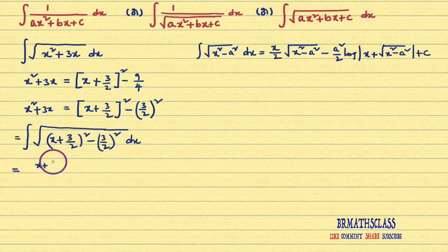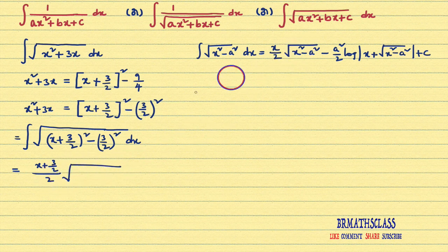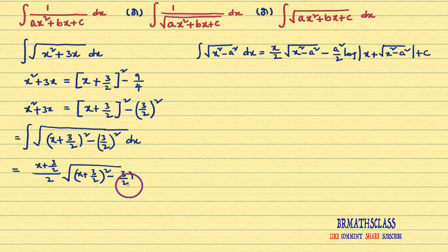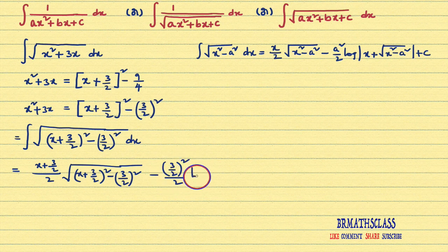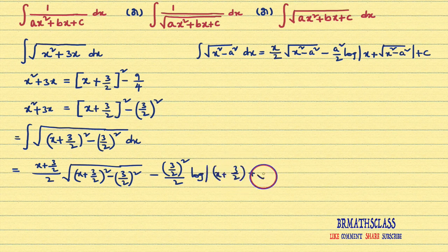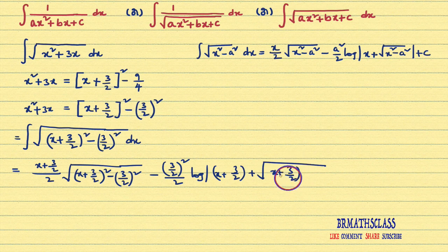What you will get: (x + 3/2) divided by 2, into square root of (x + 3/2)² − (3/2)², minus (3/2)² divided by 2, into log|x + 3/2 + √((x + 3/2)² − (3/2)²)| + C.